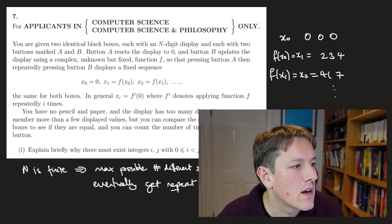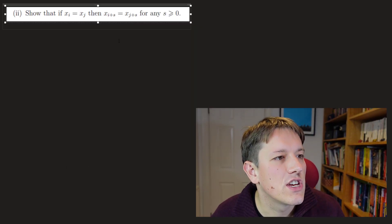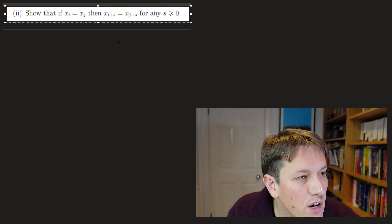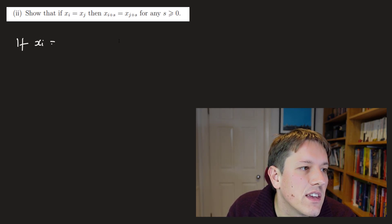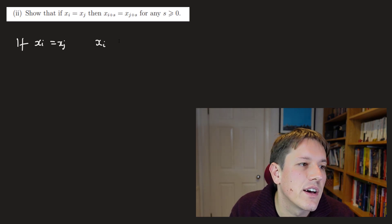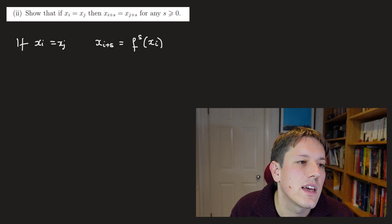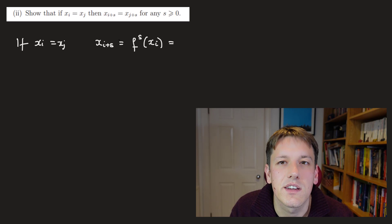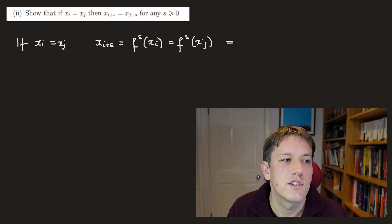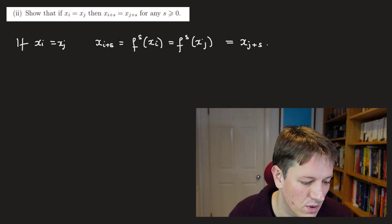In part two it says: show that if xᵢ = xⱼ then xᵢ₊ₛ = xⱼ₊ₛ for any s ≥ 0. Well, if xᵢ = xⱼ, then xᵢ₊ₛ is just applying the function f s times to xᵢ. But xᵢ = xⱼ and f is a deterministic function, so this is the same as applying f s times to xⱼ, which is just xⱼ₊ₛ. Fairly straightforward.